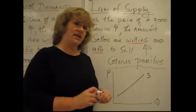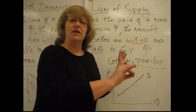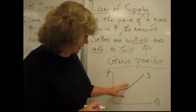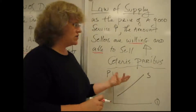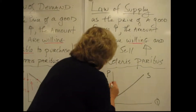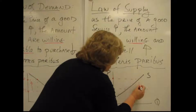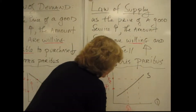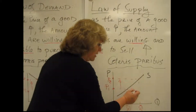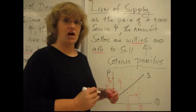Ceteris paribus is in there again too. That again means all other things equal, or ignoring everything else that might affect the amount that somebody wants to sell. The supply curve down here that I've drawn for you slopes upward. This also shows you that direct relationship between price and quantity. As the price of a good goes up from price one to price two, the amount that the supplier is willing to sell now goes up as well. That's what the Law of Supply says.